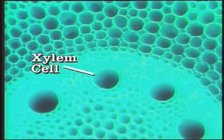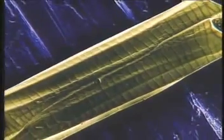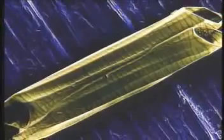Phloem cells conduct glucose from the plant's leaves. Xylem cells conduct water from roots to other parts of the plant. A photograph taken with the help of an electron microscope shows how xylem cells have a tube-like shape that makes it easy for them to conduct water.